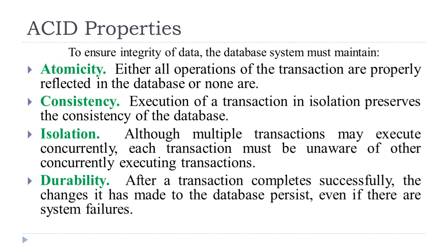What is atomicity? Either execute all operations given in a transaction or none. If you have a power failure or a system failure halfway during execution of the transaction, go back to the old consistent state. If everything is perfect, then accept the new consistent state. This is what atomicity is about — either all or none. The second property, consistency, is about the execution of the transaction ending up in a consistent state — either the old consistent state or the new consistent state — but an in-between state is not accepted.